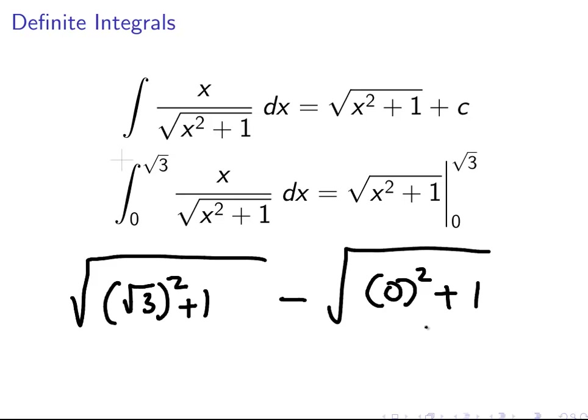And that is my, essentially that just all works out to be 1. 0 squared is just 0 plus 1. So the whole thing just evaluates the square root of 1 which is 1. Okay. The square root of 3 squared is 3 plus 1. The square root of that is the square root of 4. And that is 2.